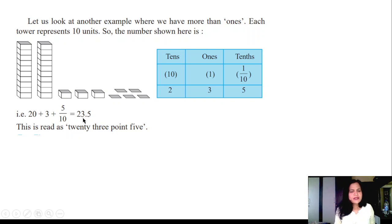It is read as 5 tenths. So now you will write: In unit place it is 3, in tens place it is 2, that is 23 point. In tenth place it is 5. Therefore 23.5. That means 23 point 5.